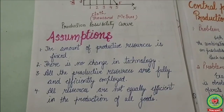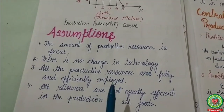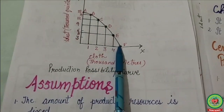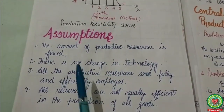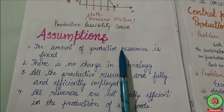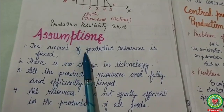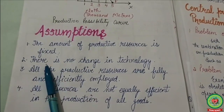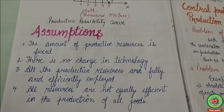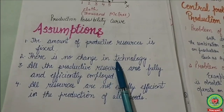Next are the assumptions under which the Production Possibility Curve is drawn. First, the amount of productive resources is fixed. Second, there is no change in technology at the time when production is carried out.